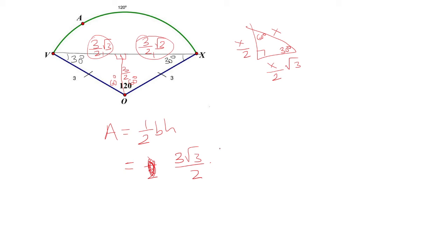Multiply by the height. The height is 3 over 2. So we do 3 times 3 is 9, and then 2 times 2 is 4. So this is our area.